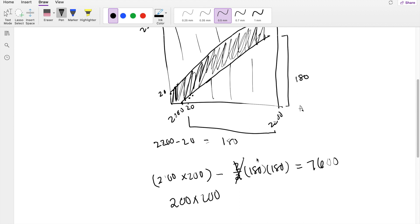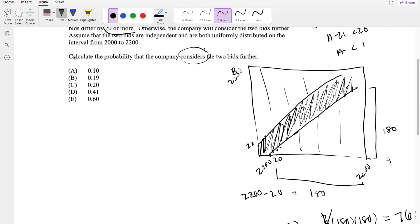So 200 times 200 is equal to 40,000. So then dividing 7,600 divide by 40,000, and you get 0.19, which is our answer, B.